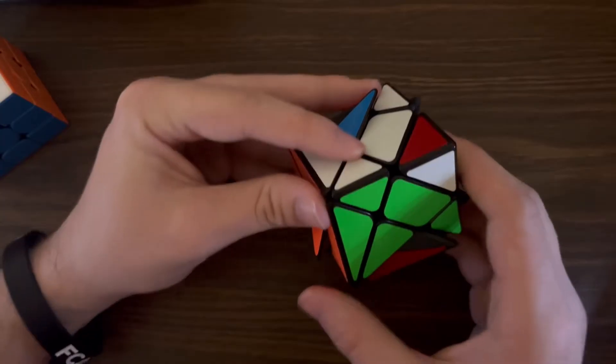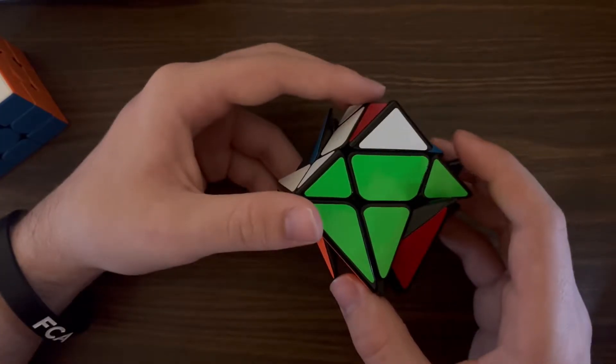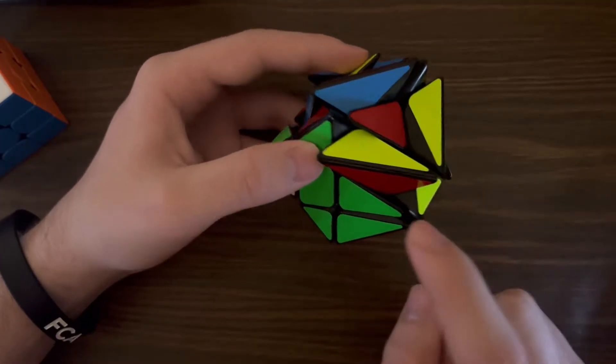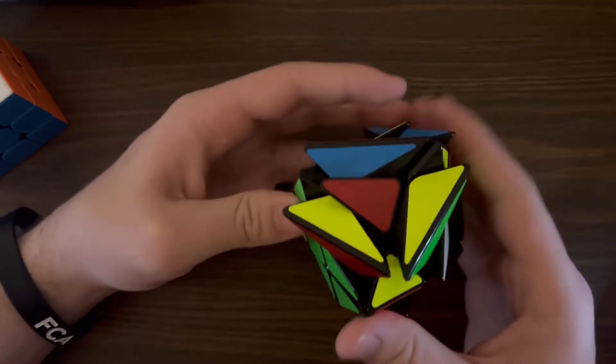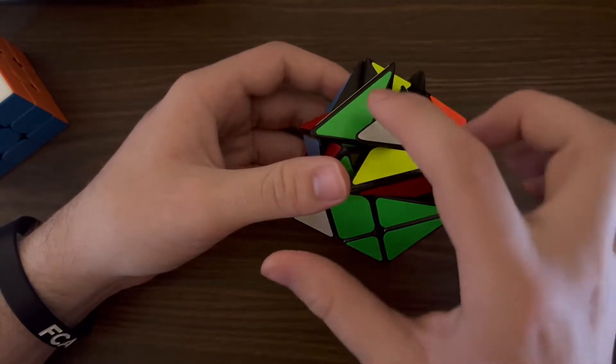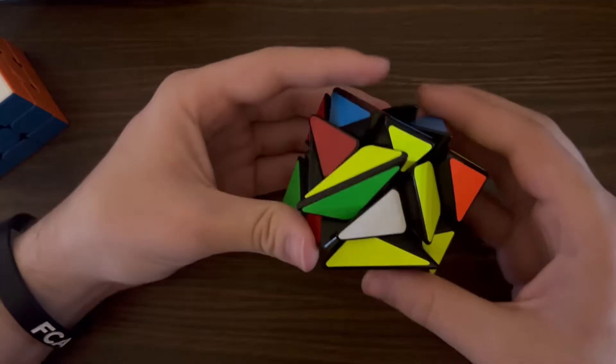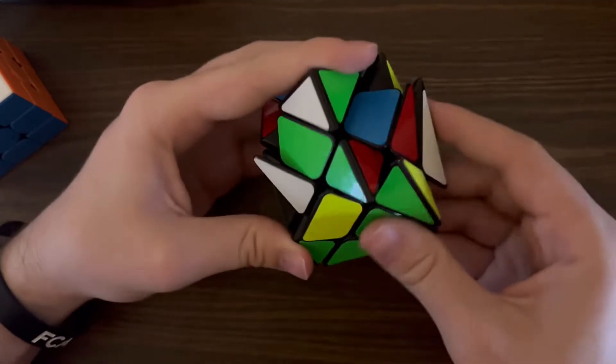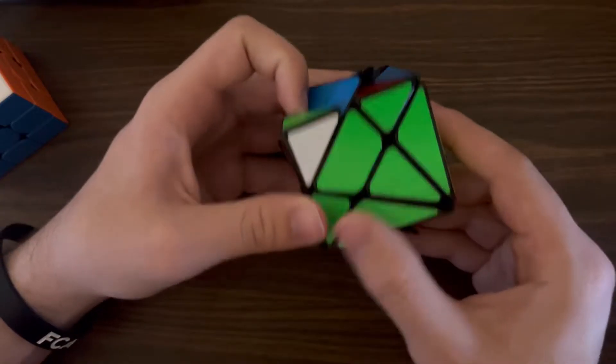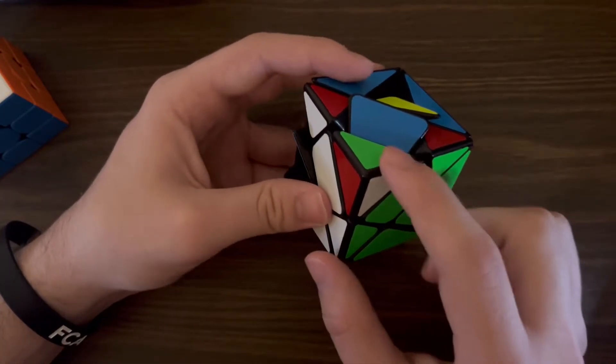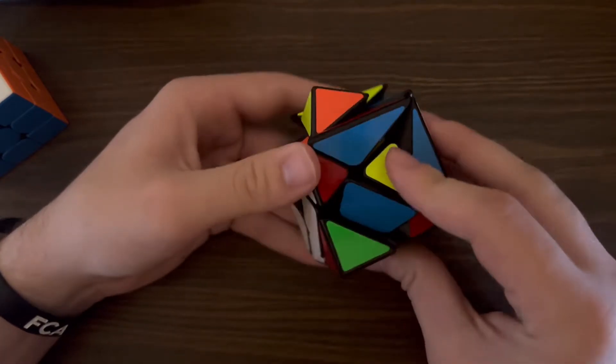So now we are going to do the second part of solving a 3x3, which is F2L. So the edge piece that needs to go right here is a green and yellow edge, which is right here. When inserting an edge piece, make sure that this color matches this color, just like you do on a 3x3. So next up is finding this piece, which is already right here, but we're going to have to put it in the right way.